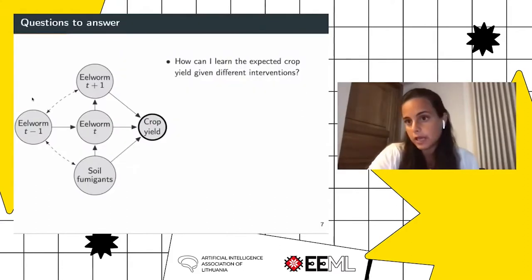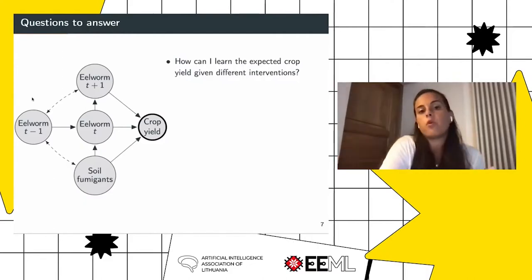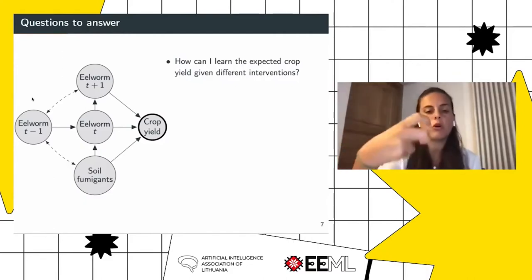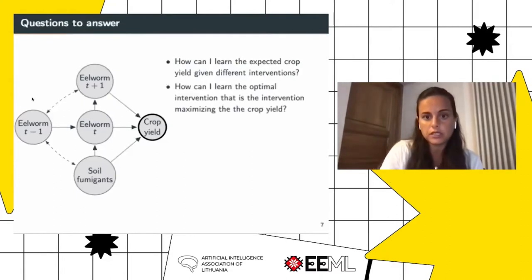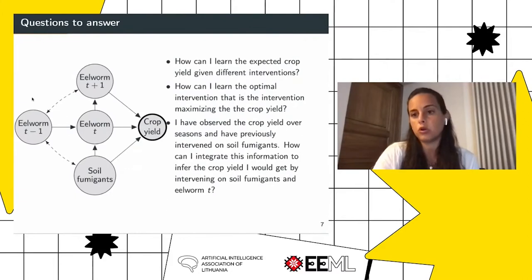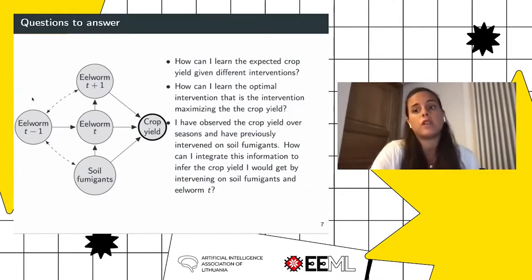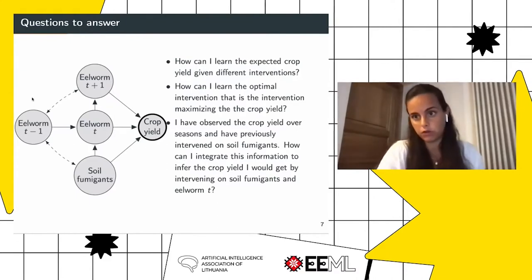Looking back at the crop yield graph, we might be interested in answering different questions. We might want to learn how crop yield behaves given different interventions; we might want to select the optimal intervention — for example, the optimal level of air population or soil fumigants — to optimize the crop yield. We might also want to draw conclusions about how different causal effects are correlated in the causal graph. For instance, if we have intervened on soil fumigants and observed corresponding crop yields, how does this correlate with an alternative intervention we might implement in the future? Can we draw conclusions from things seen in the past?